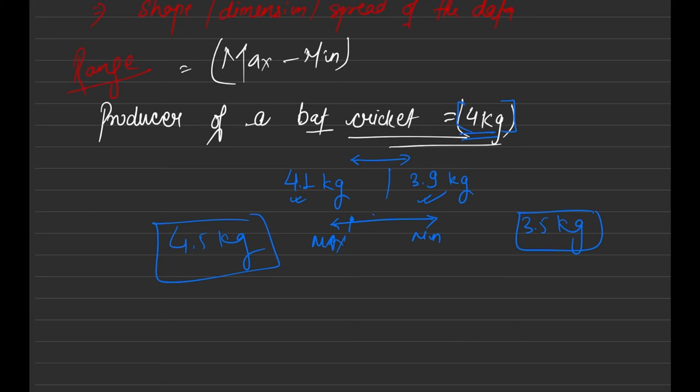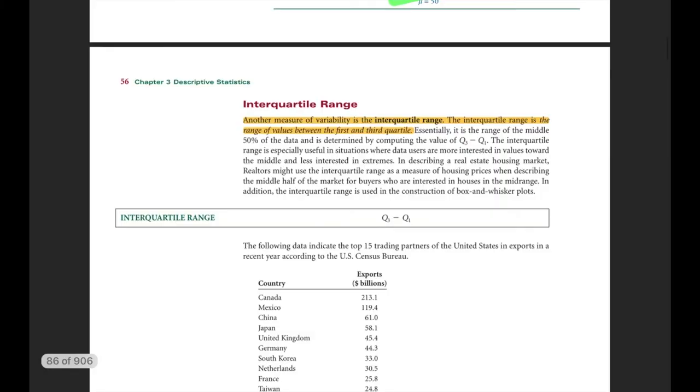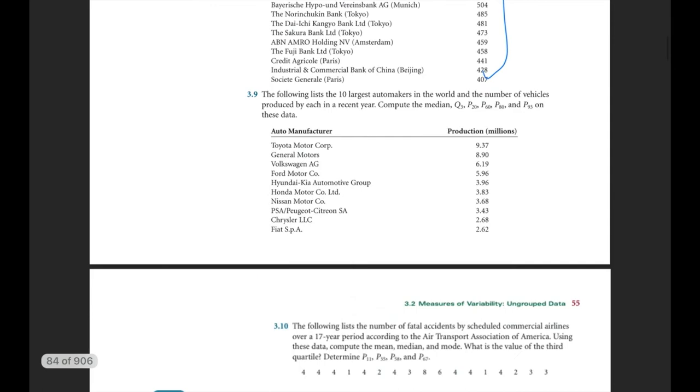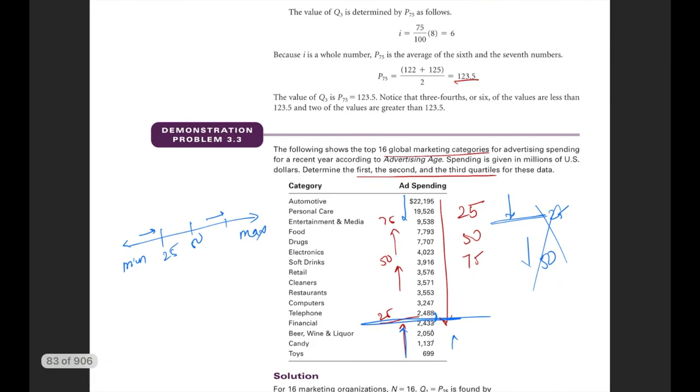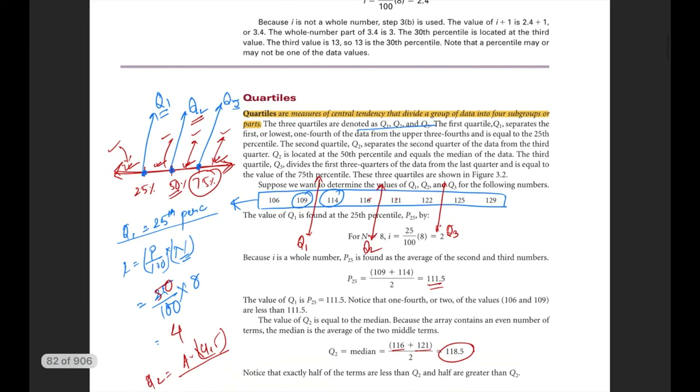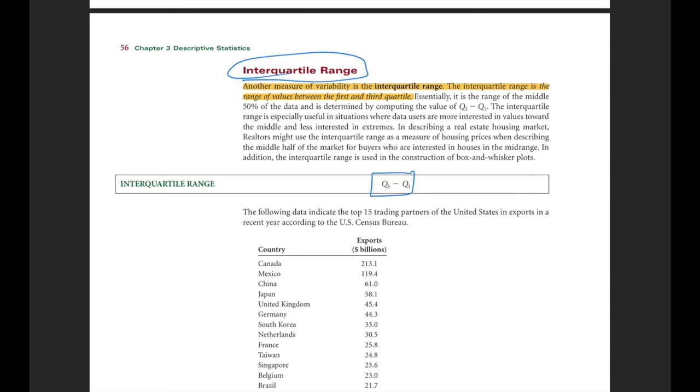Now let's quickly understand interquartile range. People, if you remember, we discussed quartile just few minutes back that it is nothing but the special type of percentile only, but instead of 100 will have only three data points. We discussed that like Q1, Q2, Q3. Now interquartile is another special case where we will just focus on this particular region only.